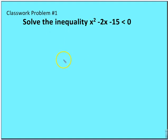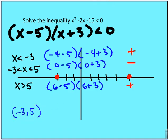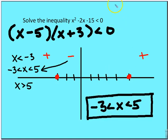Classwork problem number 1: solve this on your own. We solve as if solving an equation, find the intervals, test the intervals, and identify where the graph is less than zero. The solution is x between negative 3 and 5. In interval notation, that's written as (negative 3, 5) — the set of values strictly between negative 3 and 5.